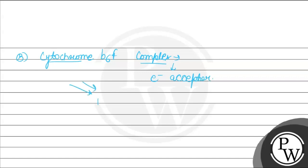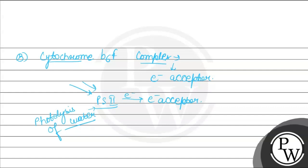सबसे पहले sunlight को PS2 absorb करता है, और यहाँ पर photolysis of water होती है, यानी water molecule का splitting होता है, जिसमें oxygen release होती है as a byproduct, hydrogen और electrons release होते हैं. वो electrons PS2 से electron acceptors तक जाते हैं — like plastoquinone, cytochrome B6F, plastocyanin — जो आगे इन electrons को PS1 में भेजते हैं. So cytochrome B6F एक electron acceptor है, जो PS2 को PS1 से जोड़ता है.